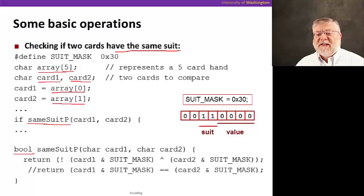What it does, you'll notice, is it takes the first card and does a bitwise and with the suit mask. What is the suit mask? The suit mask is a special value set to hex three zero. Why hex three zero? Well, that corresponds to zero zero one one zero zero zero zero.